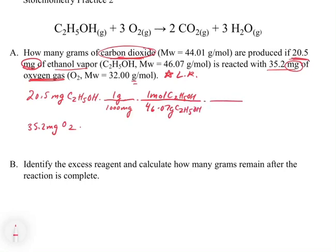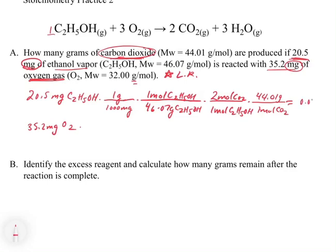Once we're in moles, we can convert from moles of reactant to moles of product. For every one mole of C2H5OH, we get two moles of CO2. We then use the molecular weight of CO2, which is 44.01 grams per mole. Multiplying out: 20.5 × 2 × 44.01, then dividing by 1,000 and by 46.07, gives 0.0392 grams of CO2.